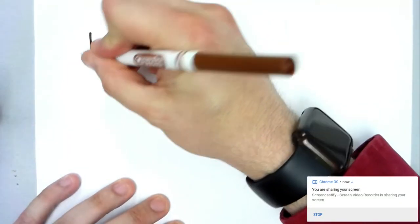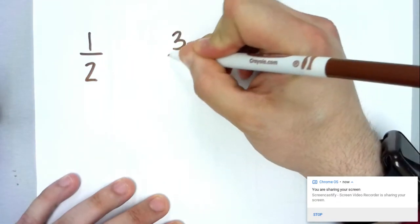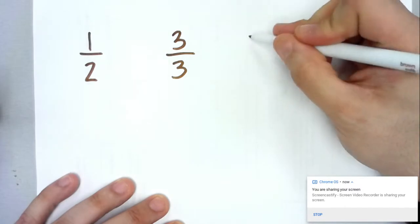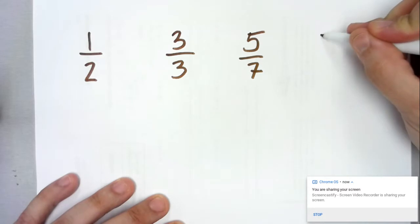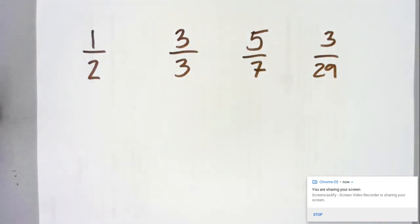One of the things that we've learned about fractions is you can have the whole broken up into really any different amount. I can have the whole broken up into two parts like in one half, three parts like three thirds, seven parts like five sevenths, or twenty-nine parts like three twenty-ninths. However I end up breaking up the whole, that's how I can do it. Decimals, however, can only be broken up into certain parts.